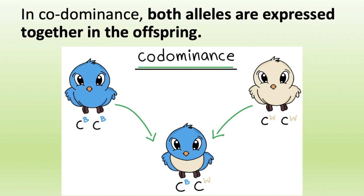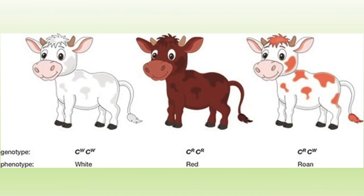Now let's go into co-dominance. Co-dominance is when both alleles are expressed together in the offspring. Using birds as an example: you have one parent that's a blue bird and another that's a tan bird, and the offspring is going to be both blue and tan — it has the visual characteristics of both parents. Similarly with cows, a white cow bred to a brown cow produces a brown and white offspring — the super form has characteristics of both parents.